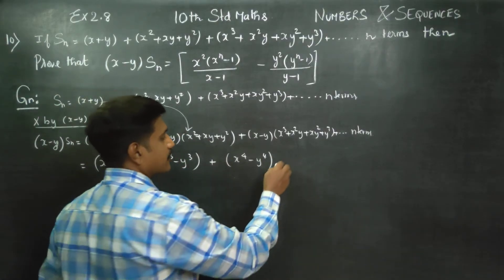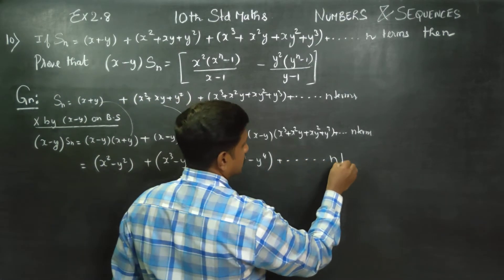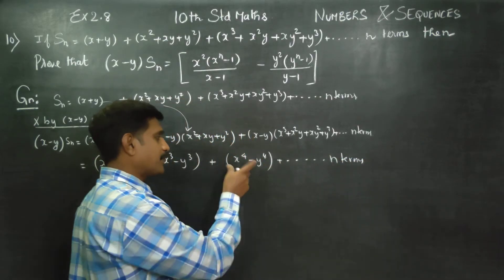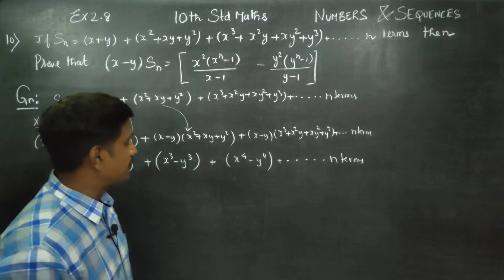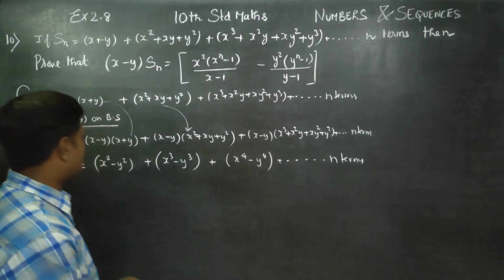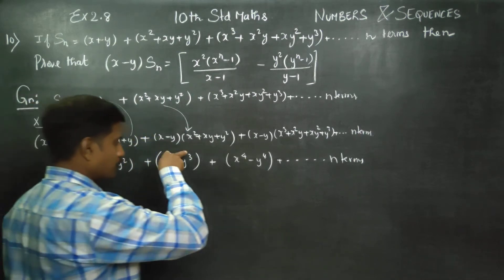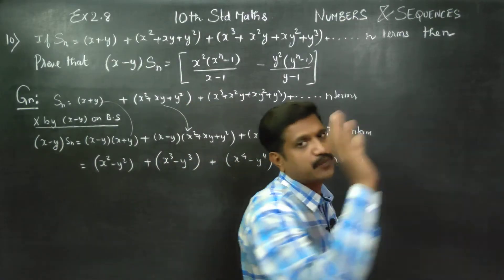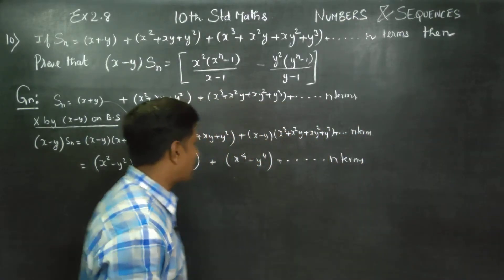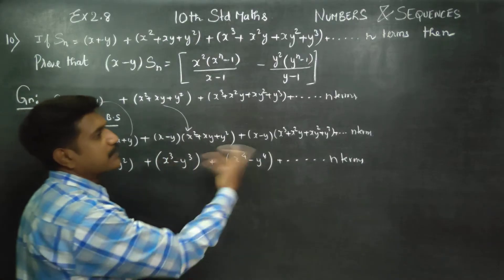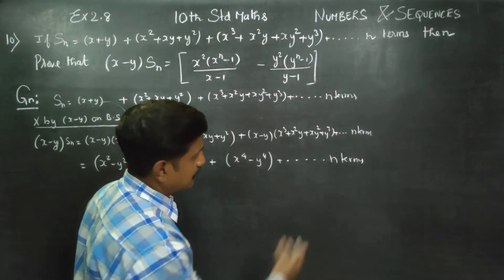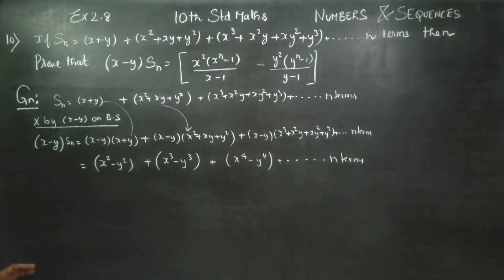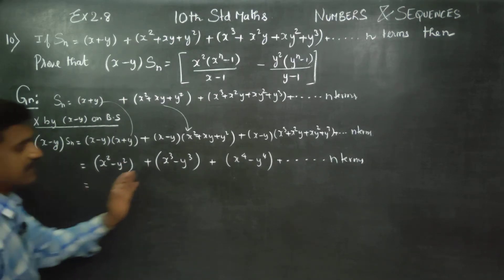Dot dot dot n terms. Multiply by the common factor. Looking at x⁴ minus y⁴: the pattern is 2, 2, 3, 3, 3, 4, 4, 4, 4, 5, 5, 5, 5, 5 — the sum is up to this.